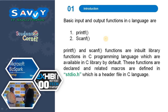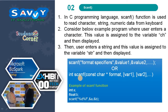Basic input/output functions in C language are printf and scanf. Printf and scanf are inbuilt library functions in C programming language, available in the C library by default. These functions are declared and related macros are defined in the standard input/output header file in C language.